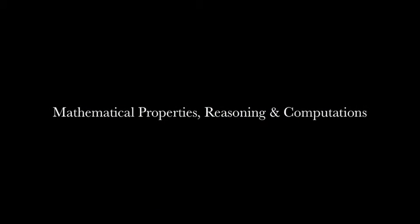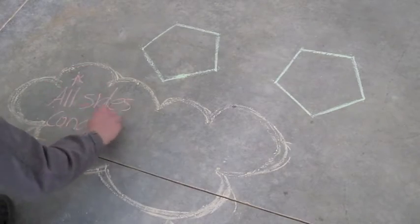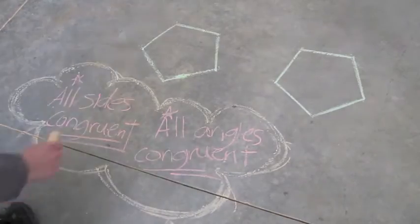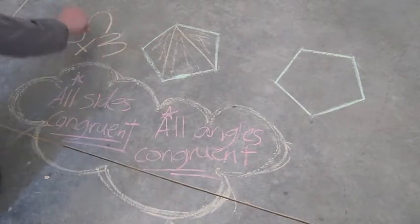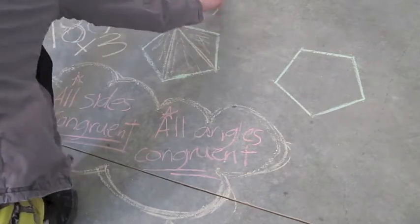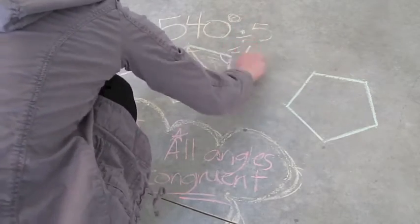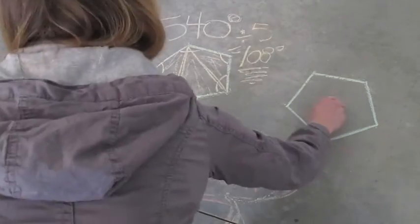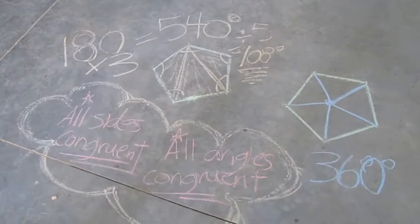Let's look at the face of a dodecahedron, which is a regular pentagon. Regular polygons must have congruent sides and congruent angles. To calculate one interior angle, I broke the pentagon up into three triangles and then divided that by five, which is the total number of angles. For the central angle, I imagined a circle broken up into five equal segments.